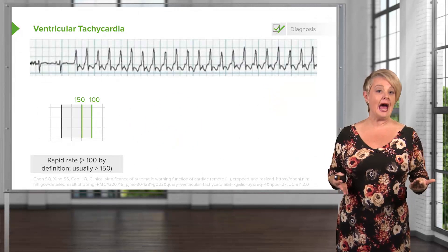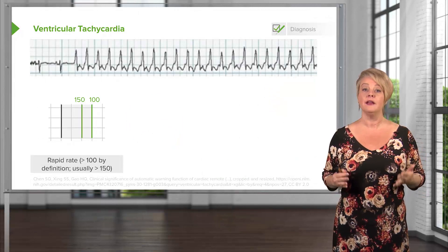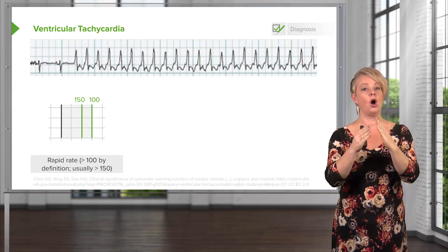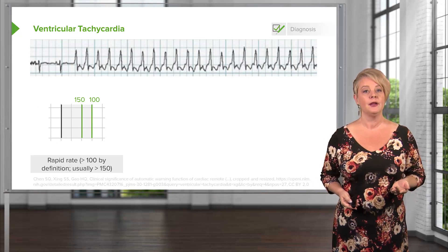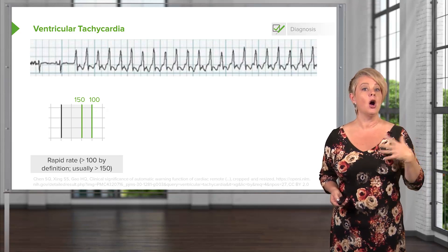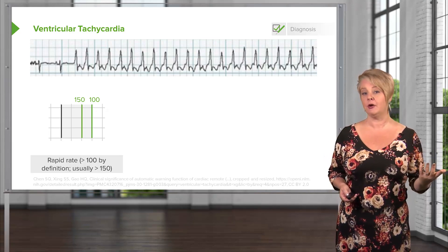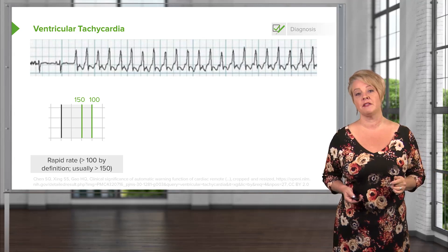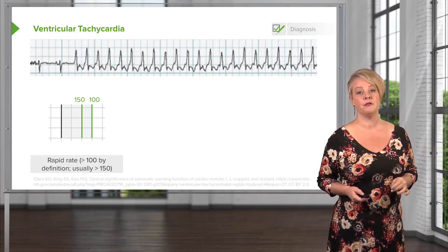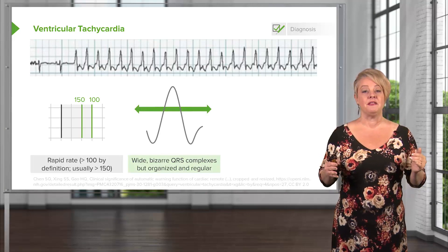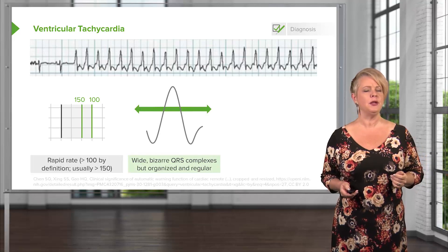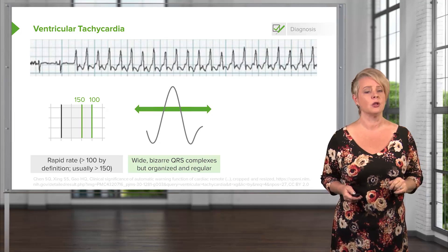By contrast, here's V-tach. V-tach is organized — it's just bizarre. The QRS complexes are big, tall, and wide, but they are organized and regular. You want to think about V-tach anytime you see tachycardia, meaning a heart rate greater than 100, most commonly greater than 150. That means your QRS complexes are going to be coming along more than every three millimeters on your tracing, or more than every two millimeters in the case of a heart rate of 150. The QRS must be wider than three millimeters to be considered V-tach, but usually it's pretty obvious — these are big, wide, very strange-looking complexes.